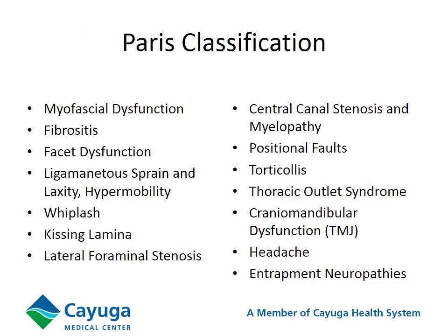Paris has these different classifications that you can see on the screen. In studying for my manual therapy test, I often found that these different classifications led to similar treatment principles — for example, facet dysfunction would be manipulated, a positional fault would be manipulated, oftentimes we might manipulate individuals with headaches, entrapment neuropathies, or lateral foraminal stenosis. It became very difficult for me to keep all these together. I found many of my students to also have difficulty with this, so I started looking for other classifications. Also, there is no direct evidence to suggest that this particular classification improves outcomes.